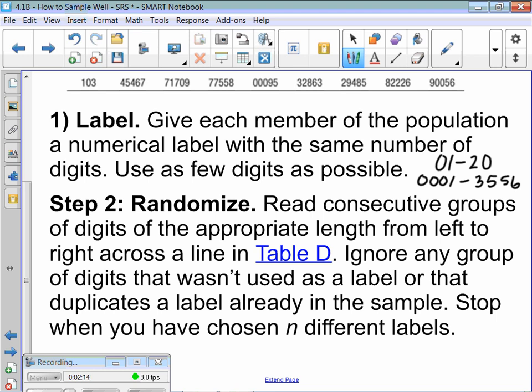Then you have to state that you're going to randomize. You actually have to say you're going to read consecutive groups of digits, whether you need to say whether that's two-digit numbers, three-digit numbers, four-digit numbers. And you're going to read from left to right across whichever line they tell you or you pick on Table D. They label them lines 101 through lines 150. Then you need to say that you're going to ignore any group of digits that wasn't used as a label. You also have to state if you're going to skip repeats, which you probably are, so you don't pick anyone twice. And then you want to state when you're going to stop, how many people you're choosing or how many numbers you need.